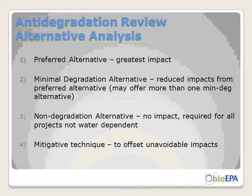A non-degradation alternative is not required for water-dependent projects. For example, if you're building a boat dock, we can't ask for a non-deg alternative where you build no boat dock — that doesn't make sense. Mitigation must be included in all three alternatives. There's usually no mitigation required for the non-deg alternative. The application fee is $200, and the review fee is based on the impacts of the preferred alternative.